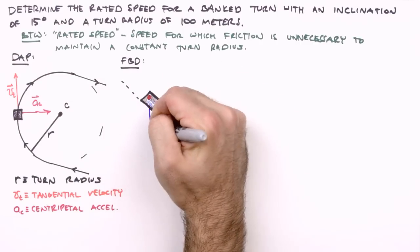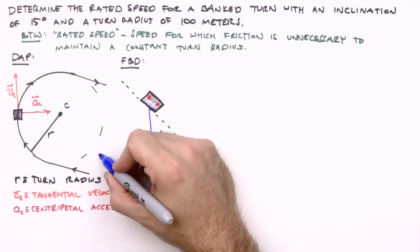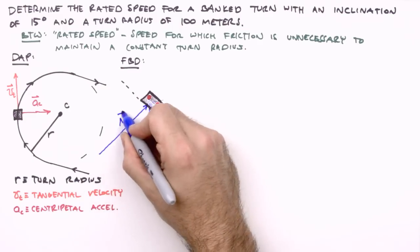Anyway, the two forces acting on our vehicle are its weight, and the normal force applied to the vehicle by the road. Now, these two forces are not perpendicular, so it isn't completely obvious which coordinate system is most convenient to use.